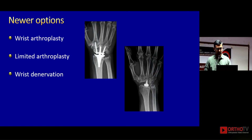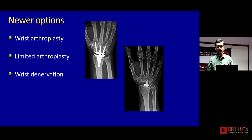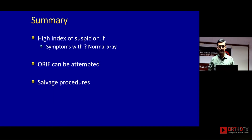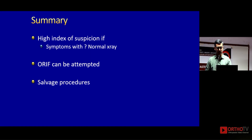There are newer options available: wrist arthroplasty, limited wrist arthroplasty, and wrist denervation, which is coming up in a good way — you leave the wrist as it is but just denervate all around. In summary, try not to miss the bus. Have a high index of suspicion in a wrist that is stiff and painful. Get an X-ray; if you can't see anything, get a CT or MRI. You can try open reduction early, or always have a salvage procedure ready if you cannot achieve adequate open reduction.